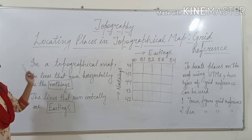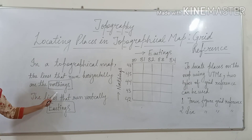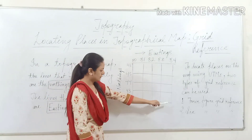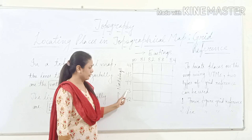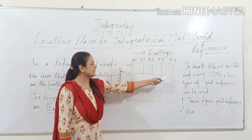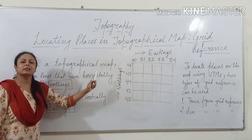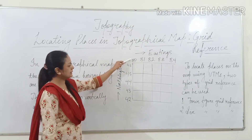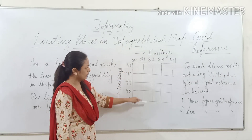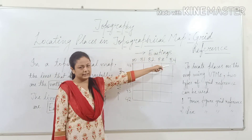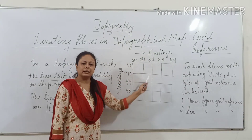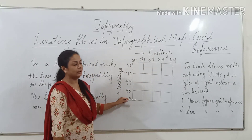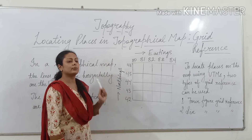In a topographical map, the lines that run horizontally are called northings. You can see here the numbers 42, 43 — these are horizontal lines, so they are northings. The lines that run vertically are eastings. Here the values are 80, 81, 82, 83, 84 — they are moving towards the east, so they are eastings. Vertical lines whose value increases towards the east are eastings, and horizontal lines whose value increases towards the north are northings.